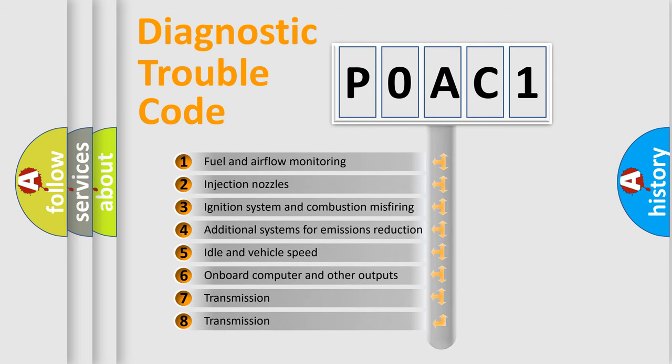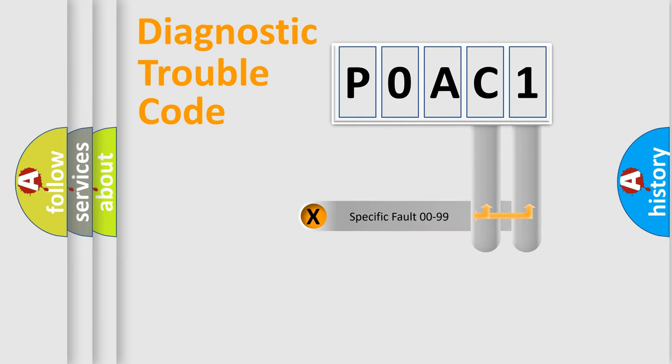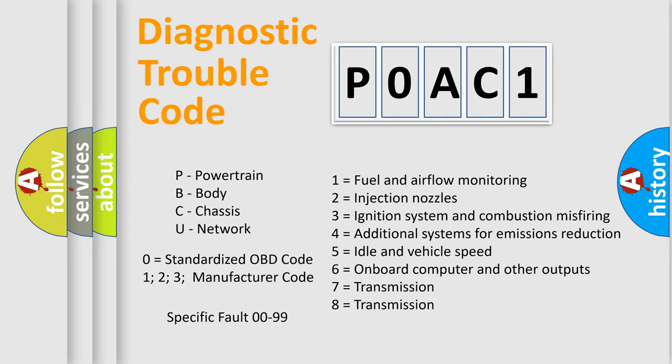The distribution shown is valid only for the standardized DTC code. Only the last two characters define the specific fault of the group. Let's not forget that such a division is valid only if the second character code is expressed by the number zero.